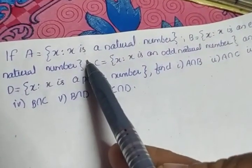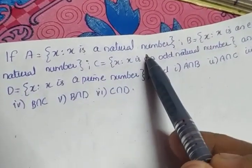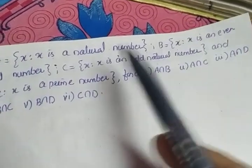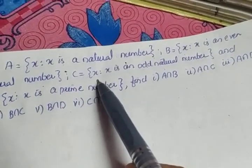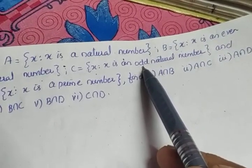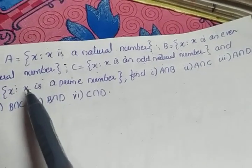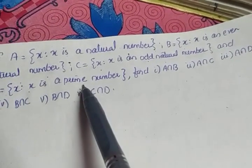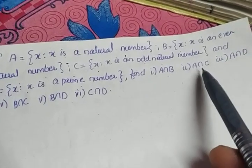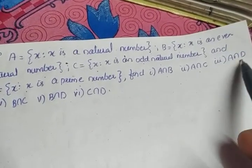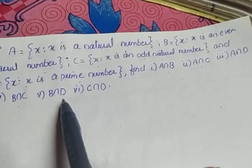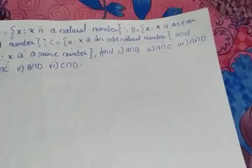If A is equal to set of all X such that X is a natural number, B is equal to set of all X such that X is an even natural number, C is equal to set of all X such that X is an odd natural number, and D is equal to set of all X such that X is a prime number. Find A intersection B, A intersection C, A intersection D, B intersection C, B intersection D, and C intersection D.